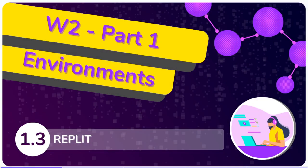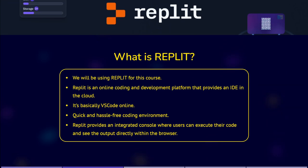Replit. We will be using Replit for this course. So, what is Replit? Replit is an online coding and development platform that provides an integrated development environment in the cloud. It's basically VS Code Online. It offers a range of programming languages and tools, allowing users to write, run, and collaborate on code directly from their web browsers. Replit provides a seamless and accessible coding experience, particularly for beginners or those looking for a quick and hassle-free coding environment.